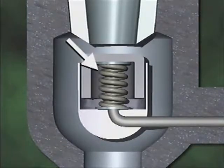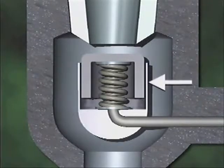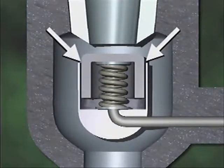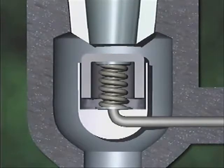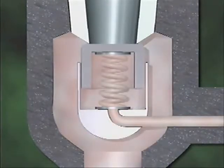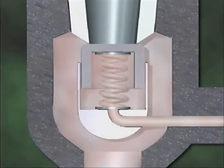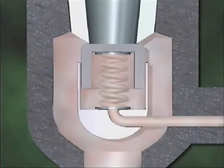The valve also has a disc guide, which is a sleeve that aligns the disc with the seat. A small opening between the disc guide and the disc allows system fluid to pass through from the inlet to the bottom of the main disc. Consequently, system pressure is exerted on both the top and the bottom of the disc during normal operation. Spring tension is also exerted on the bottom of the disc. If system pressure increases, it increases on both sides of the disc, but the valve won't open because the pressure on top counterbalances the pressure on the bottom, and spring tension holds the valve closed.